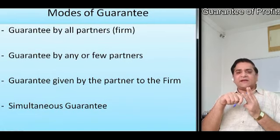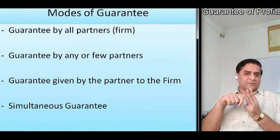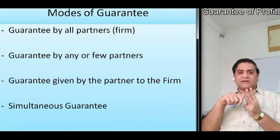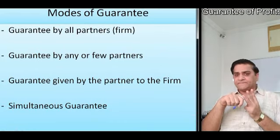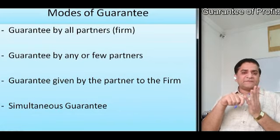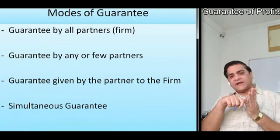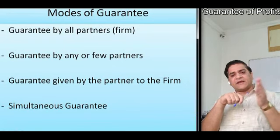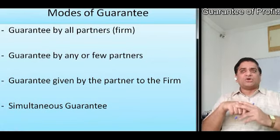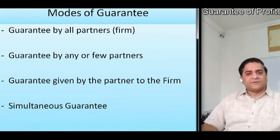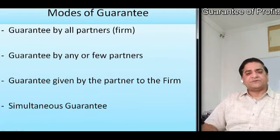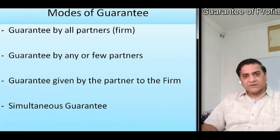The third type would be the Guarantee given by the partner to the partnership firm. Here the partner agrees to contribute to the profits of the firm to a certain extent. The fourth and last type would be a simultaneous Guarantee, wherein the firm gives Guarantee to a partner and also one of the partners gives a Guarantee to the firm towards contribution in the total profits.